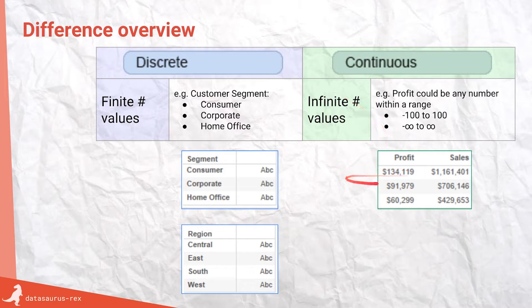But essentially, they're just numbers for the simplest reasons. So they can be between any range. This profit could be from negative a million to plus a million or infinity, that kind of stuff.